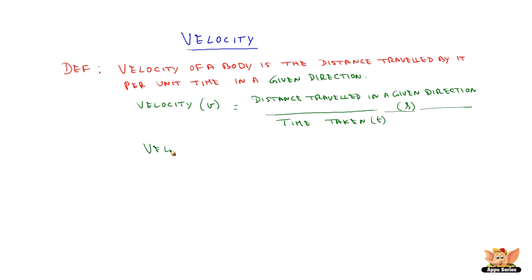Velocity is also defined as displacement experienced by the body which also can be represented by S divided by time taken. Hence V is equal to S by T which is meter per second the unit.